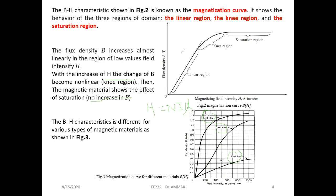This B-H characteristic is important because we need it in the study of electric machines. We can obtain this curve for any type of electric machine by an experiment called the open circuit test.